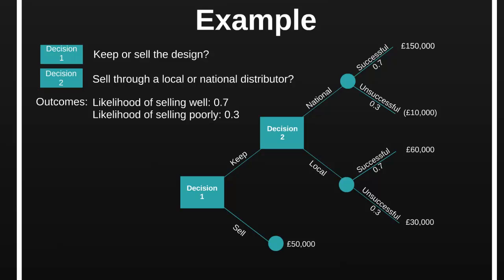Now we have an outcome associated with each decision. If we choose to keep our design and go with the national distributor, these are the possible eventualities. Similarly, if we keep our design and go with the local distributor, we could either earn £60,000 or £30,000. And if we sell our design, we earn a one-off £50,000 payment from our competitor. We can now use this information to inform our decision making. Specifically, we'll use this information to calculate the expected values of each available combination of decisions.